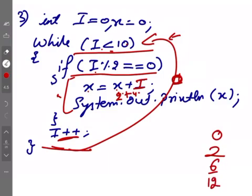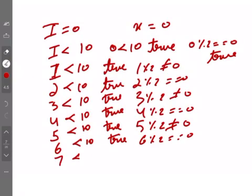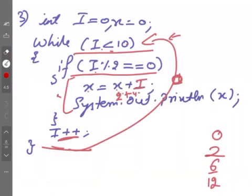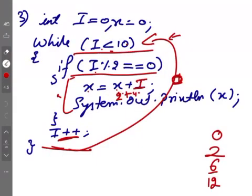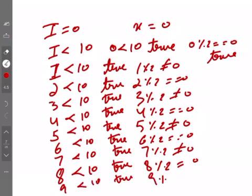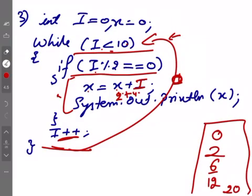Phir aapke paas I 7 ho jayegi, 7 less than 10 true hai, 7 mod 2 divide nahi ho ta hai, 7 2 se divide nahi ho ta hai. Phir ho gaya 8, 8 less than 10 is true, 8 mod 2 equal to 0 is true, is true, so x ki purani value 12, 12 plus 8 will be 20, so next value woh print kareega 20 because x ki new value 20 ho ga hai. Phir I ho gaya 9, 9 less than 10 is true lekin 9 mod 2 is not equal to 0, so x ke saath kush ni ho ga. Phir I ho jayegi 10, 10 less than 10 is false, we are a stop, loop stop ho gaya. Toh aapke paas output jo hai wo hai ye on different lines.